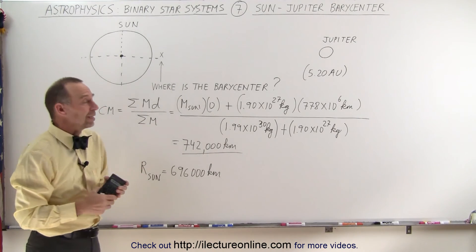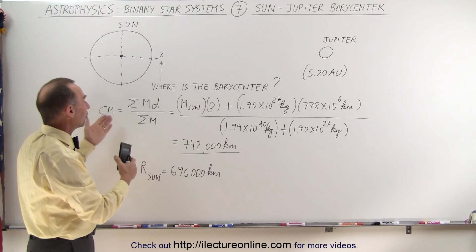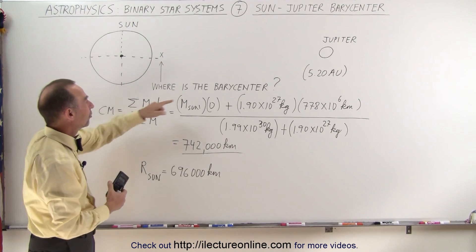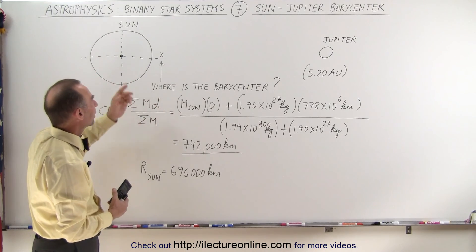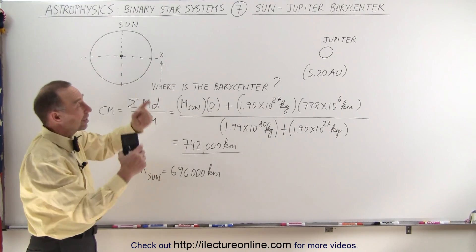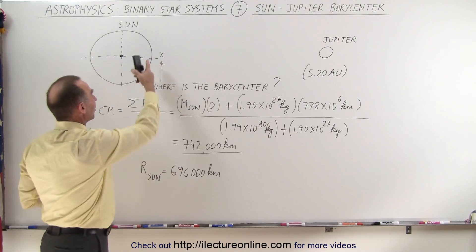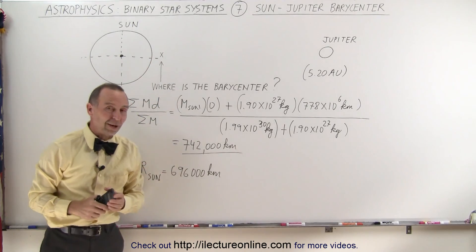So this gives you a pretty good idea of how we calculate the center of mass, which then points us to the barycenter, which then allows us to understand how one object goes around the other and how both objects actually orbit the barycenter. That's how it's done.